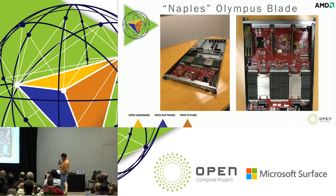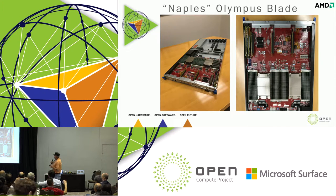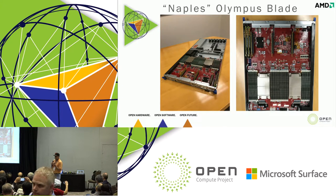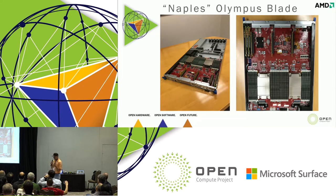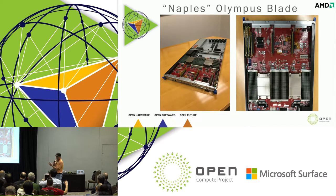This is the platform we have in the booth. What we've tried to do with Naples is simplify the infrastructure. The way I describe it: processor, memory, I/O — there's no Southbridge, there's no switches. It's a very clean and elegant design. Two sockets, up to 32 cores, with an unprecedented amount of DRAM capability and bandwidth.